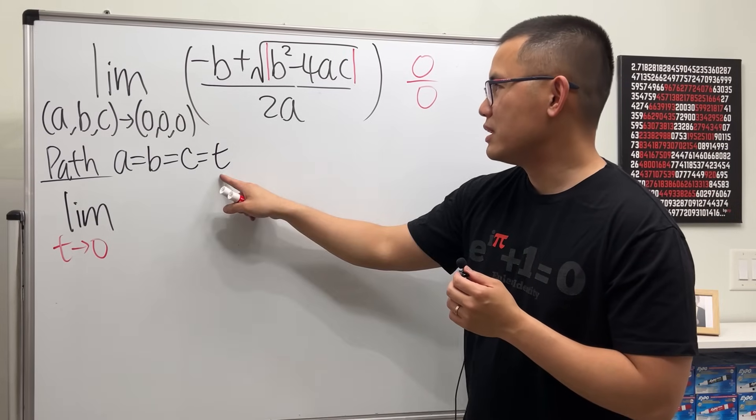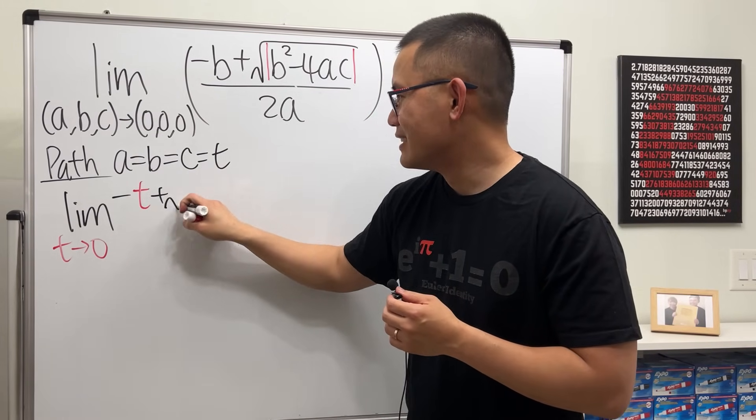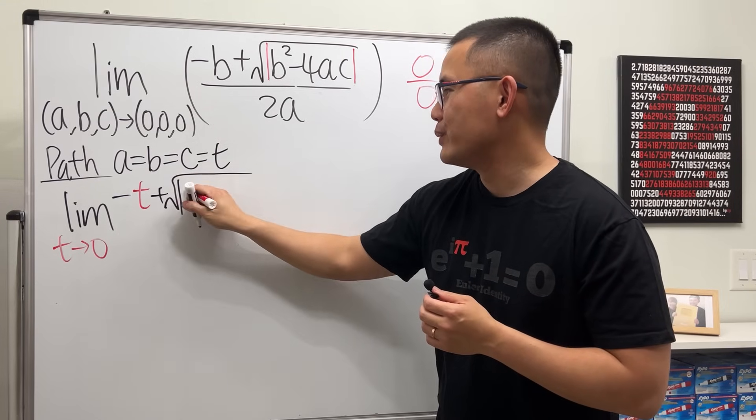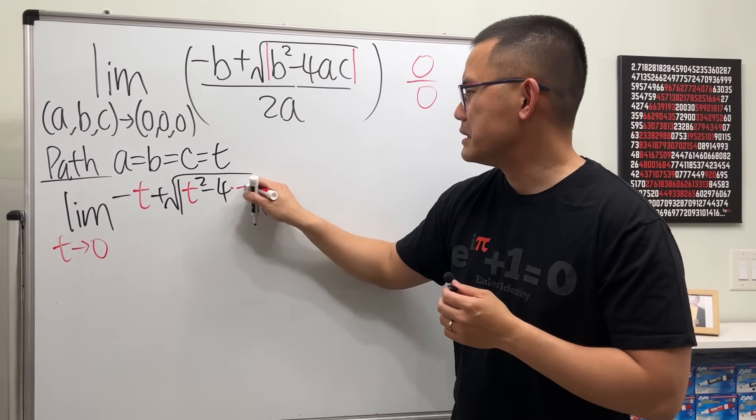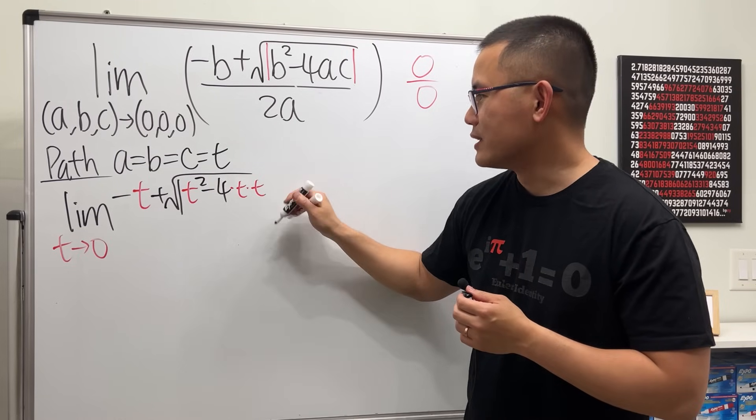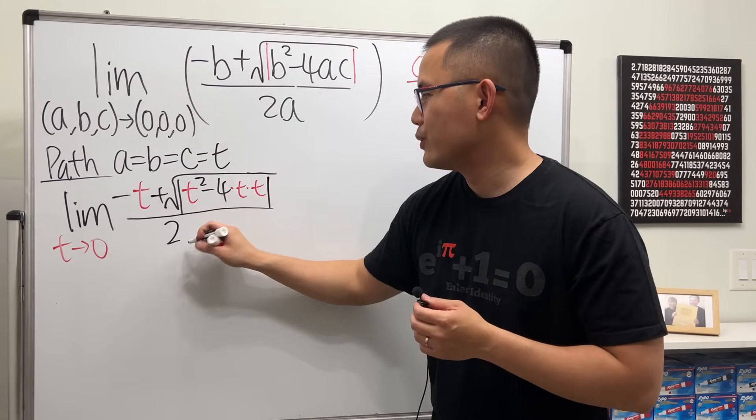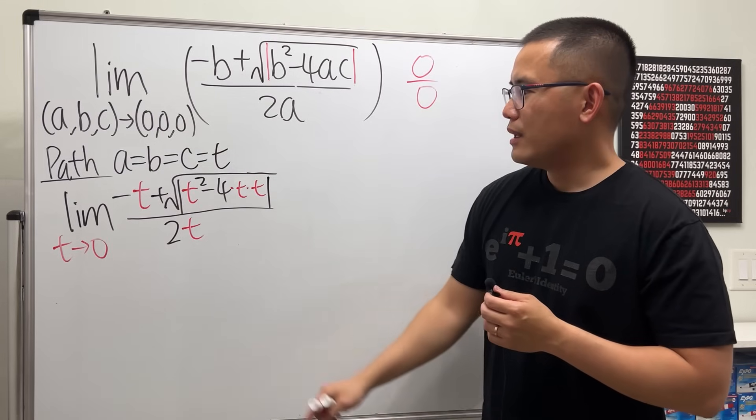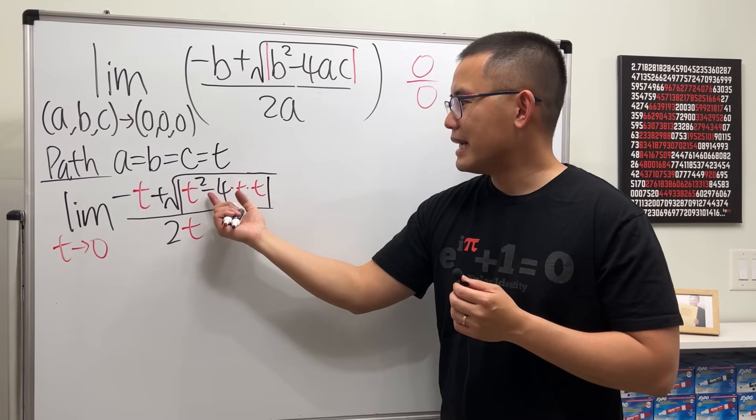And I'm just going to take the limit because a, b, c, they are all going to zero, so that means t will go to zero. And all I have to do is put t into all the variables. So again, negative t plus square root with the absolute value t squared minus four times t for a, t for c.